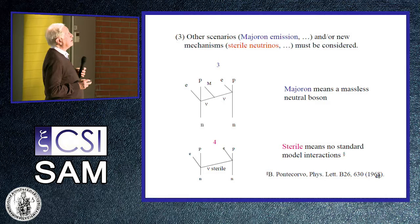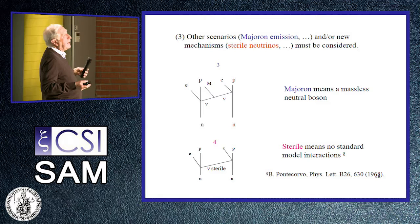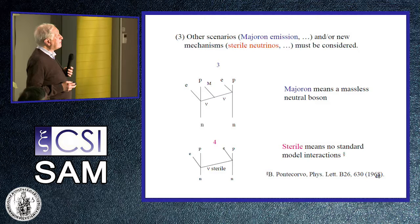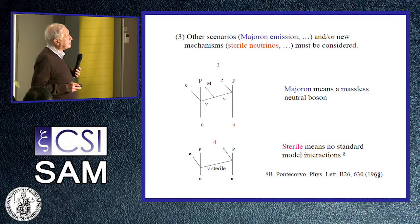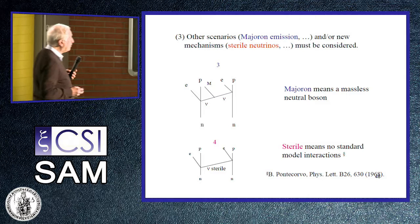The remaining possibilities are other scenarios — for example, majoron emission or the presence of sterile neutrinos. The graph shows majoron emission, where the antineutrino emitted changes and emits a majoron, becomes a neutrino, and emits again. A majoron here means a massless neutral boson. A fourth scenario is that a sterile neutrino — meaning one with no standard model interactions — is emitted. Pontecorvo was the first person to mention this possibility, almost 50 years ago.